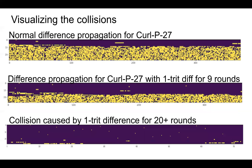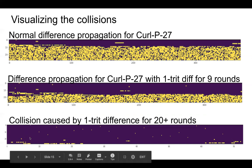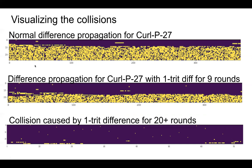Visualizing difference propagation in curlP27: normally you start with a one-trit difference, it slowly diffuses, and by about the 10th round it's diffused throughout the entire state. If you prevent it for nine rounds, it pretty much diffuses through the entire state by the 18th or 20th round. Our goal, shown in the third version, is no diffusion for 20 rounds. By round 20 diffusion starts occurring, but it's so late and so few rounds remain that by the 27th and final round it hasn't diffused through the entire state. Because we chose position 17, where it has diffused is within the first third of the state and will be erased with the next message block.